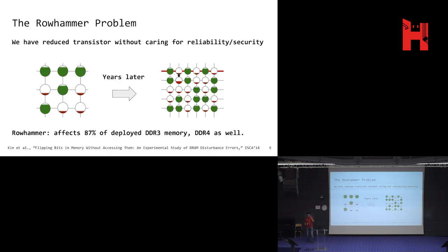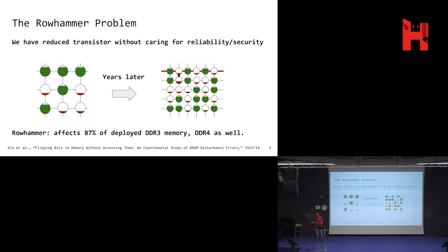What is Rowhammer? The main core of the problem is that we have reduced the size of transistors. Back in the day, a few megabytes of memory was a lot — but nowadays you can buy a phone and get gigabytes of memory in the same physical area. In DRAM specifically, to store information you use capacitors. You store some charge in them — if you store enough charge it will be a one-bit, and if you don't store charge it will be a zero-bit. Back in the day, these capacitors were big, so you needed to store a lot of charge.